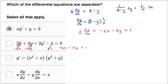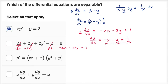Dividing everything by two, I get the derivative of y with respect to x equals negative x minus y plus one half. It's not obvious how I can write this as a product of a function of x and a function of y, so this one is not separable. I don't know how to write this as a function of x times a function of y.